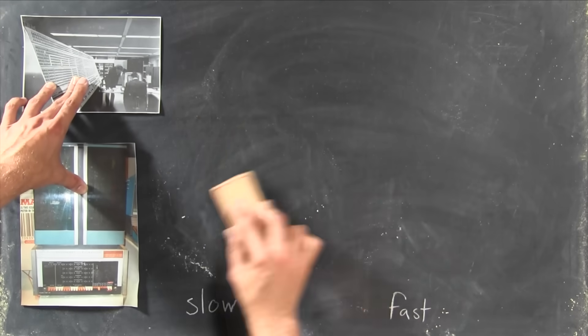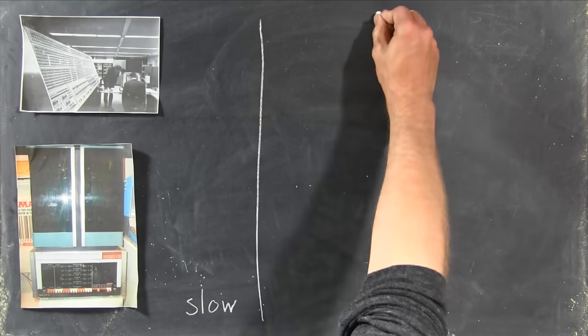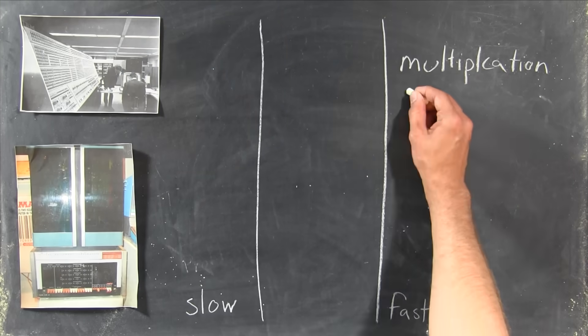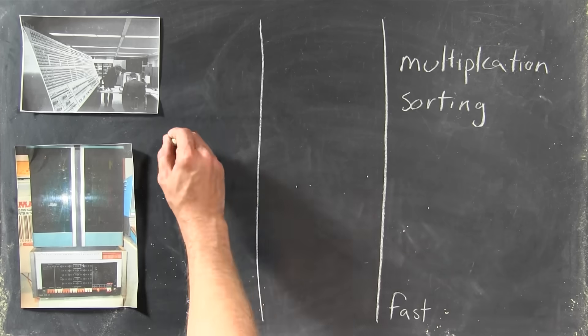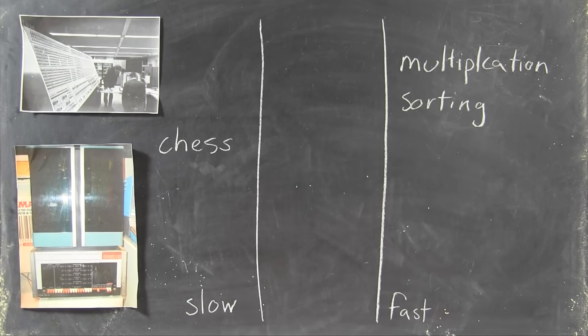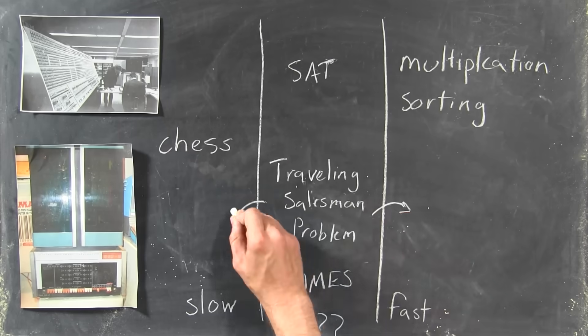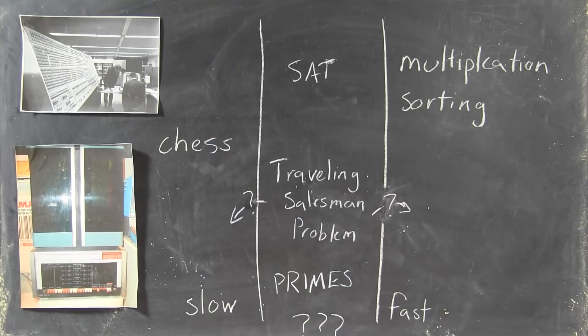To get a handle on the situation, they started sorting the problems into classes based on how fast a program could solve them. For problems like multiplication, they had really fast programs, and for others, like playing absolutely perfect chess, they figured out that there just was no fast program. But for a bunch in between, they weren't sure whether there was a fast way to do it. So they kept trying.